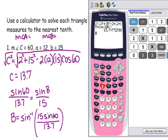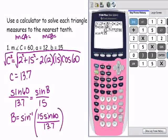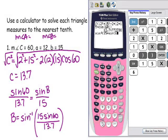So 2nd sine to get the inverse, 15 times sine 60, close the parentheses to end the 60.